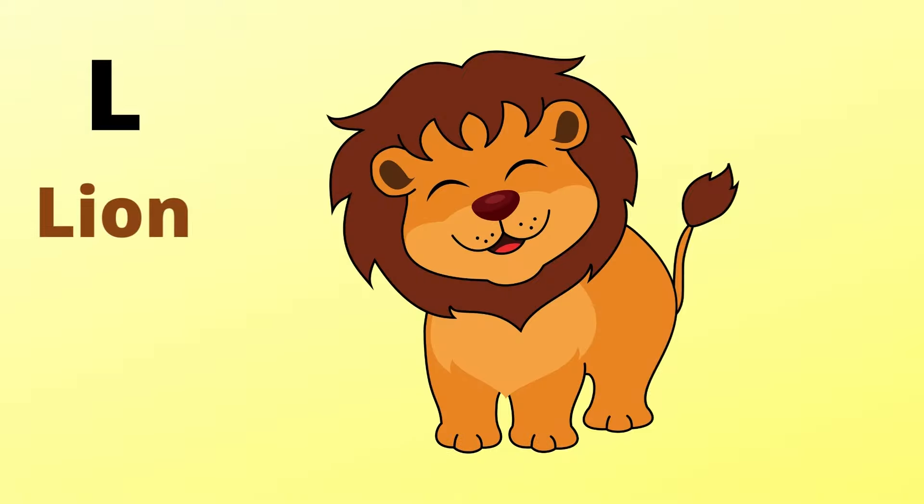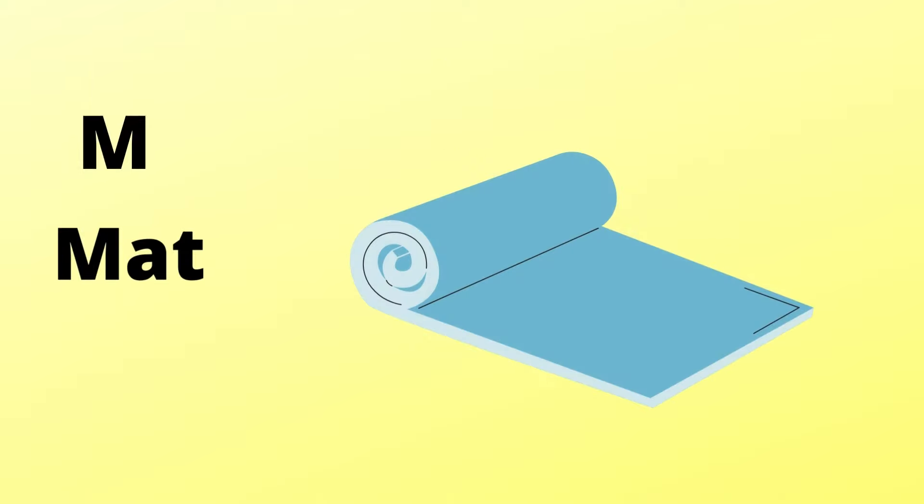M is for mat, m-m-mat. N is for net, n-n-net.